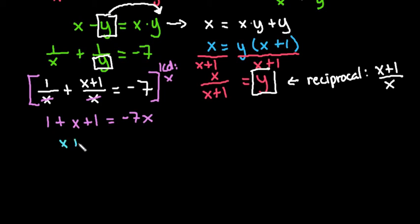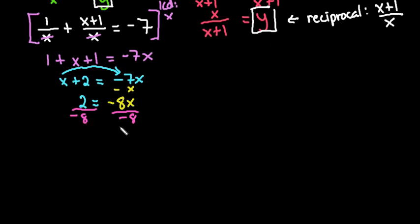Adding like terms, I end up with x plus 2 equals negative 7x. I need to bring this x over to the other side, which gives me 2 equals negative 8x. My final step is to divide both sides by negative 8. If I reduce this, I get x equals negative 1 fourth. So that's my first number.